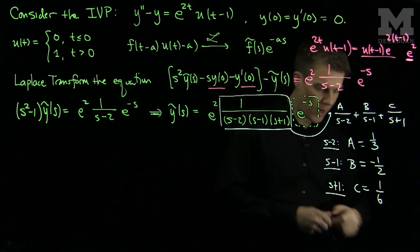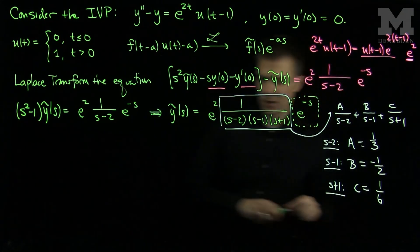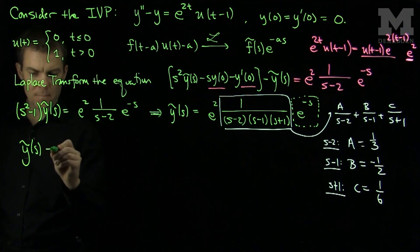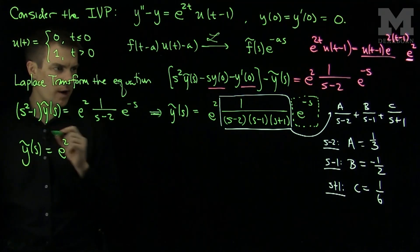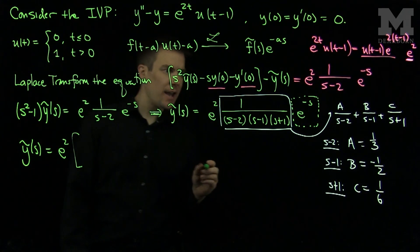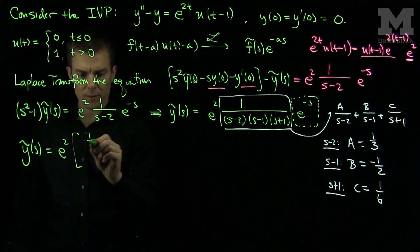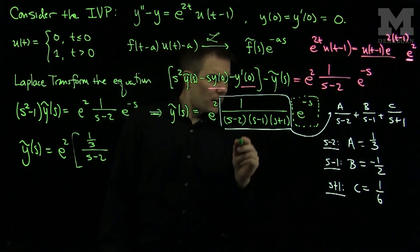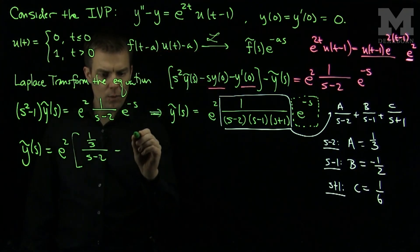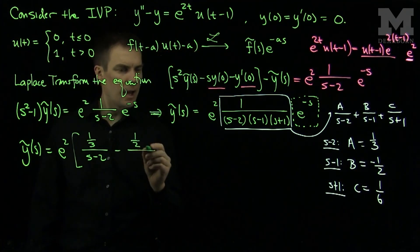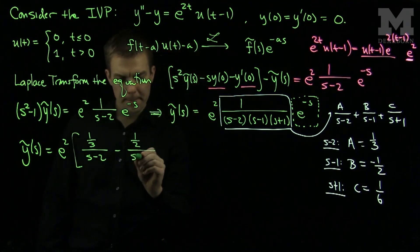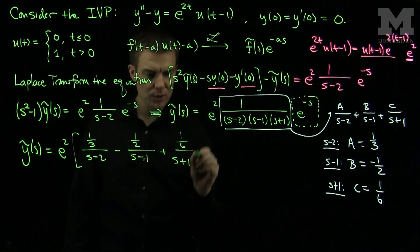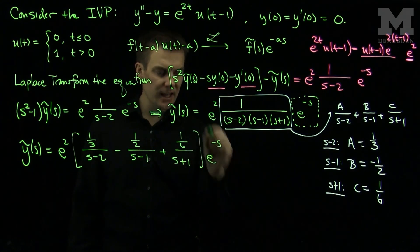We can now rewrite y-tilde of s as e squared times the quantity: 1 third over s minus 2, minus 1 half over s minus 1, plus 1 sixth over s plus 1, all multiplied by e to the negative s.